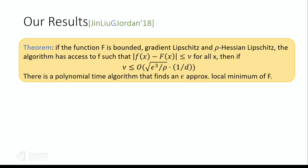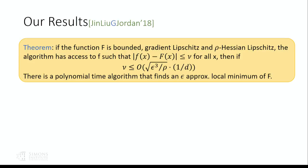This dependency might look strange — why epsilon to the power 1.5, and why the extra 1/d factor? It turns out this is the right dependency because we show a matching lower bound: in the same setting, if nu is larger than this bound by a factor of log-squared d, then any algorithm that finds an epsilon-approximate local minimum of the original function F with at least constant probability must query the function small f at least e to the log-squared d number of times. Since e to the log-squared d is not polynomial in d, no polynomial time algorithm can do that.